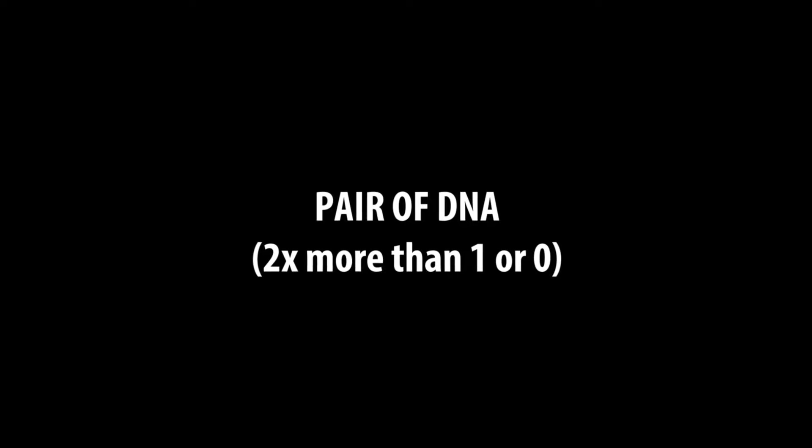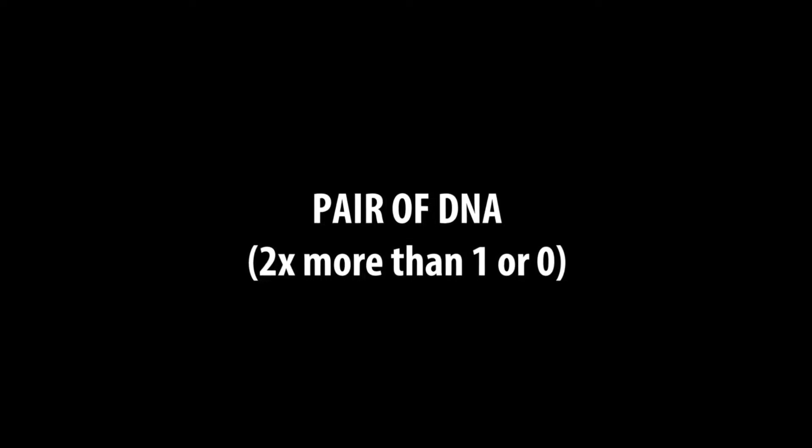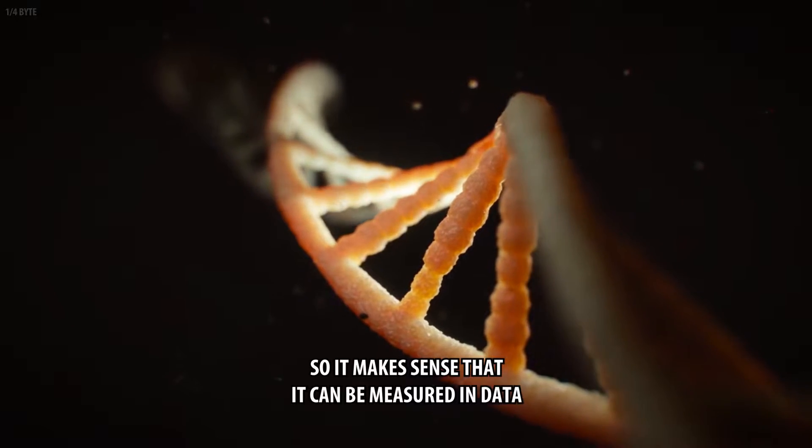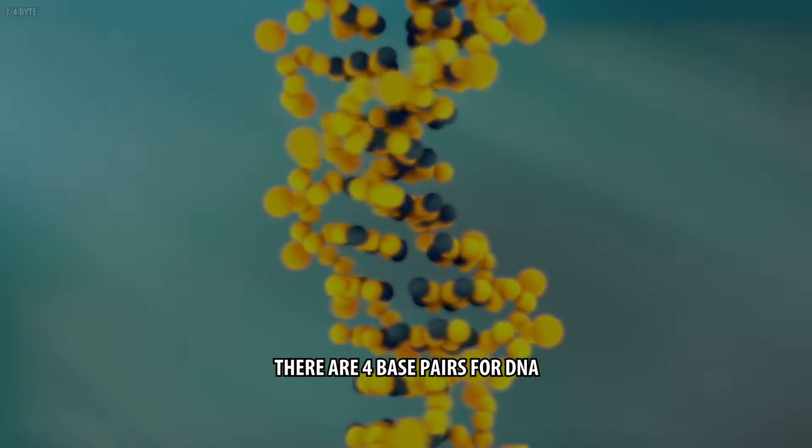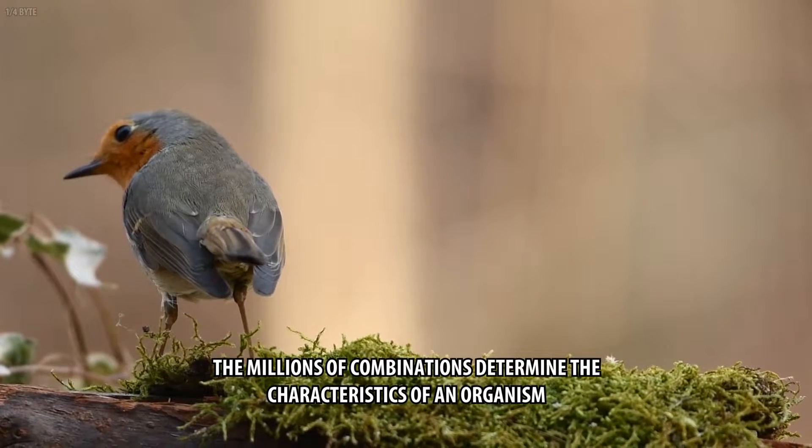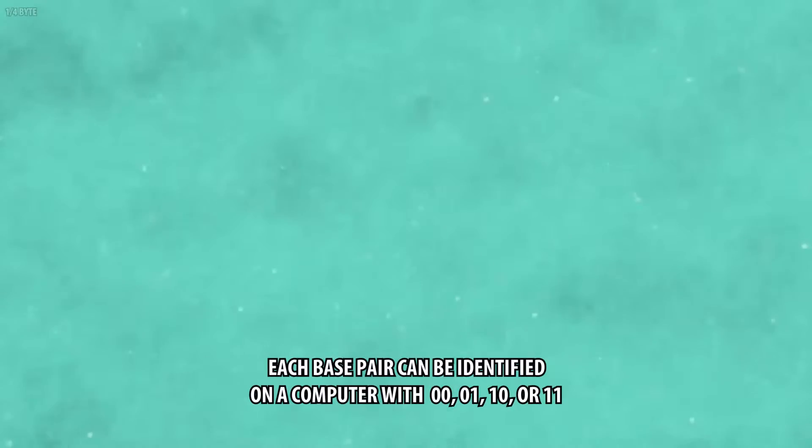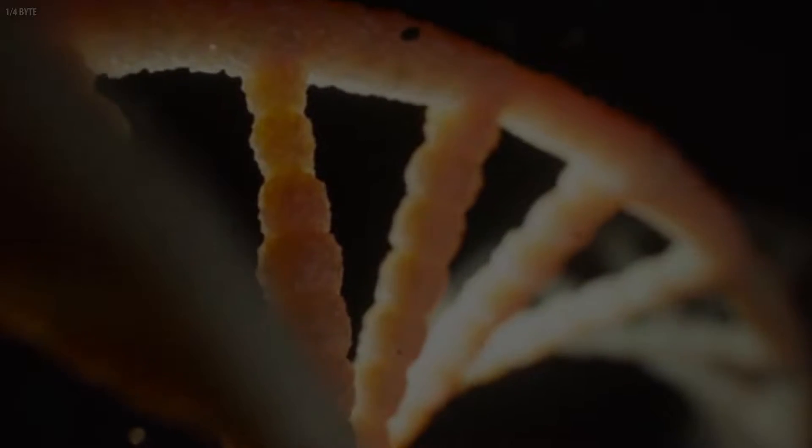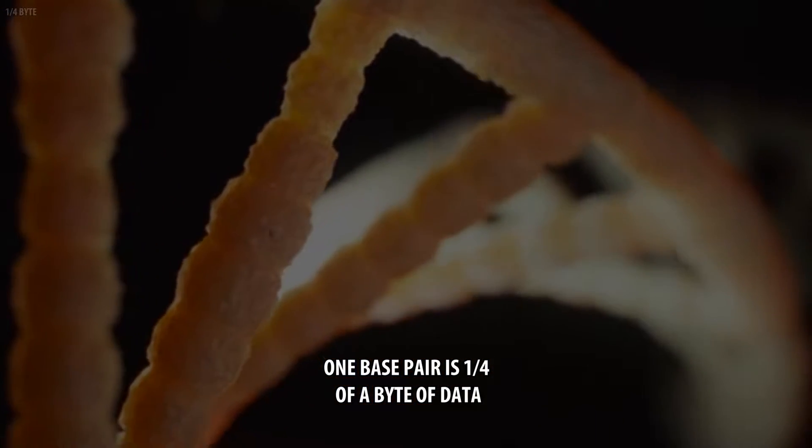Pair of DNA, 2 times more than 1 or 0. DNA is the code of life, so it makes sense that it can be measured in data. There are 4 base pairs for DNA. The millions of combinations determine the characteristics of an organism. Each base pair can be identified on a computer with 00, 01, 10, or 11. One base pair is 1/4th of a byte of data.